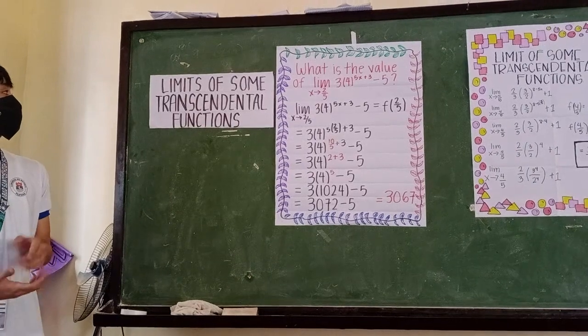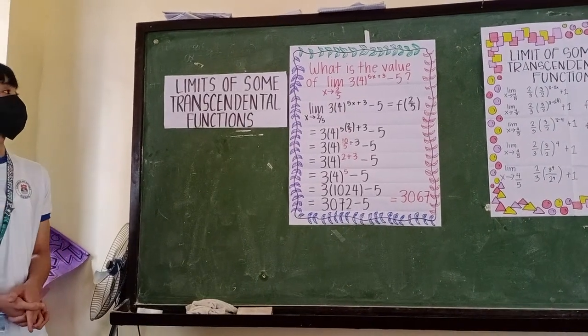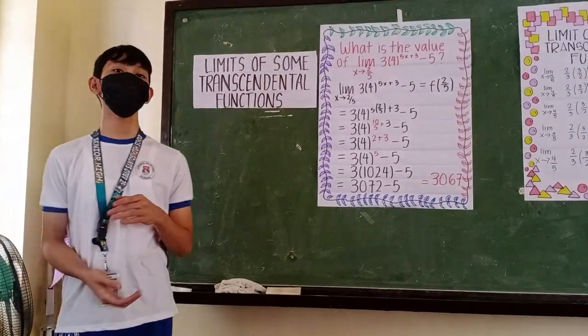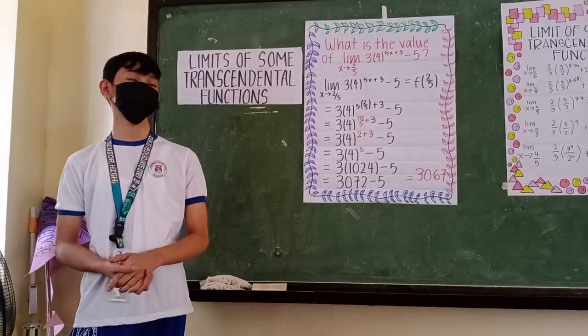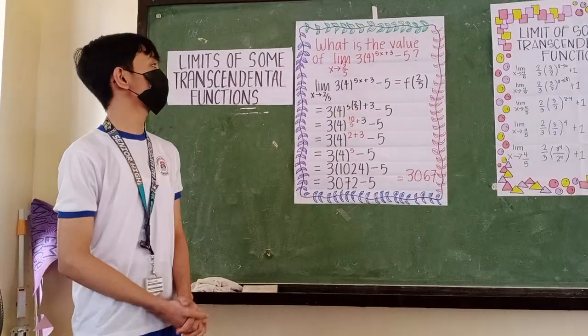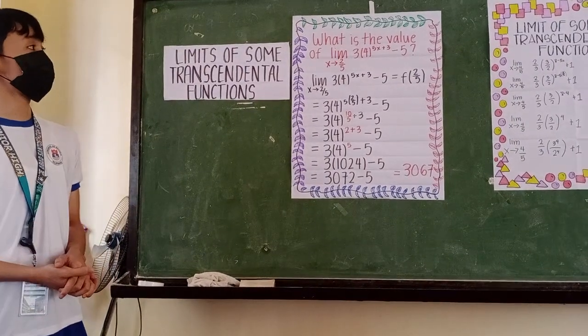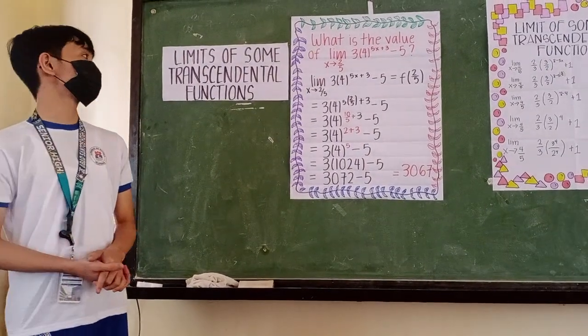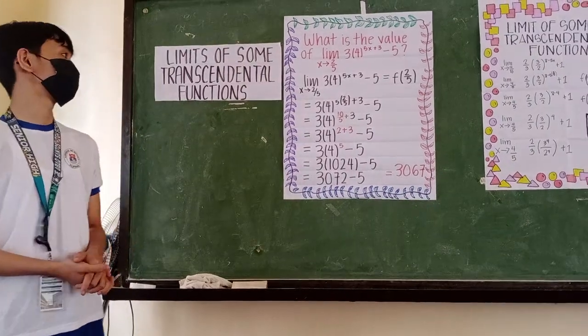The limit of some transcendental functions for the problem is to find the value of this expression. What is the value of the limit of 3 times 4 raised to 5x plus 3 minus 5 as x approaches 2 over 5?